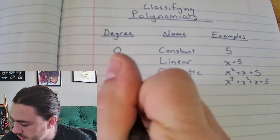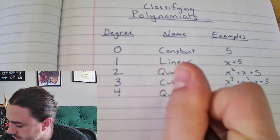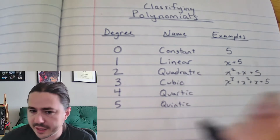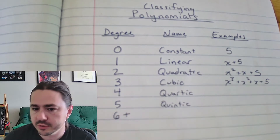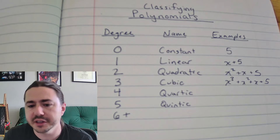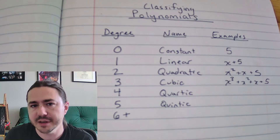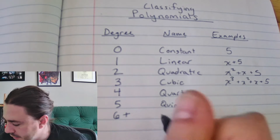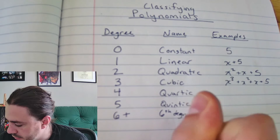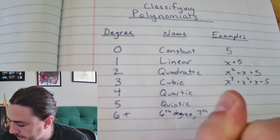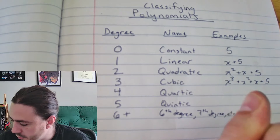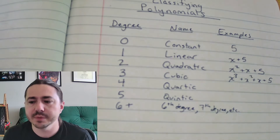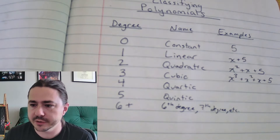Degree 4 is quartic. Degree 5 is quintic. Anything that is 6 or above, you just call it by its degree — like sixth degree or seventh degree, whatever the degree is. It doesn't have a special name; you just call it the nth degree. So like if you have x to the 10th, it would be a 10th degree polynomial — no special name.